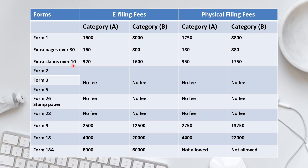For claims, 10 claims are accepted within the base 1,600 rupees. If you file more, say 13 claims, you pay 1,600 plus 320 rupees per extra claim — so three extra claims would cost 960 rupees additional. For Category B applicants, the extra claim fee is 1,600 rupees per claim, so three extra claims adds 4,800 rupees.